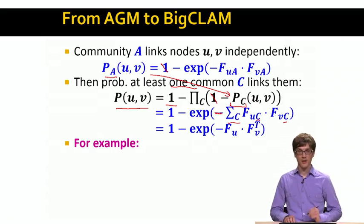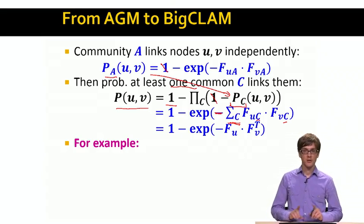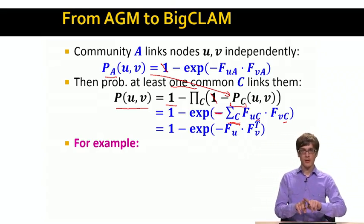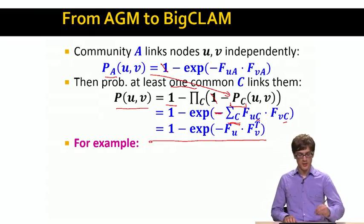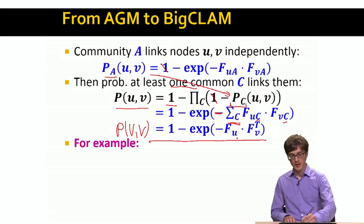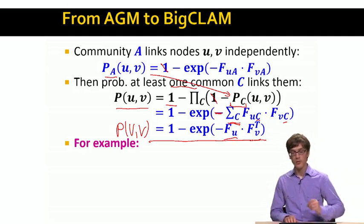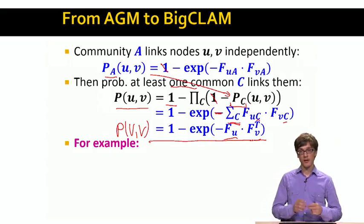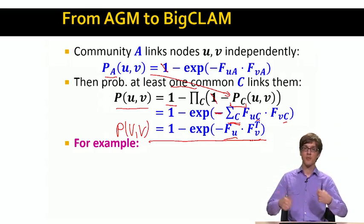What we notice is that the summation here is simply a dot product — we are multiplying the components of the two membership strength vectors together. To write this more compactly: the probability of node U linking to node V is simply one minus the exponential of minus the dot product of the row for node U and the row for node V in matrix F, where these rows tell us to what degree each node is a member of each community.